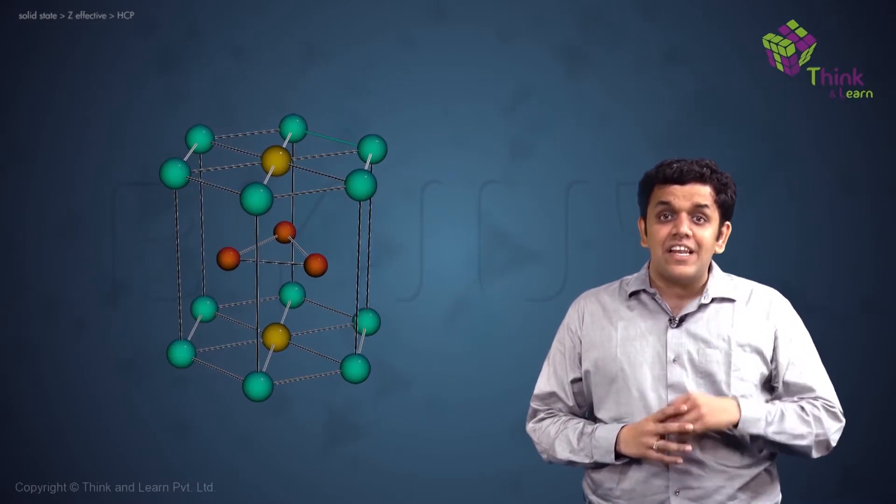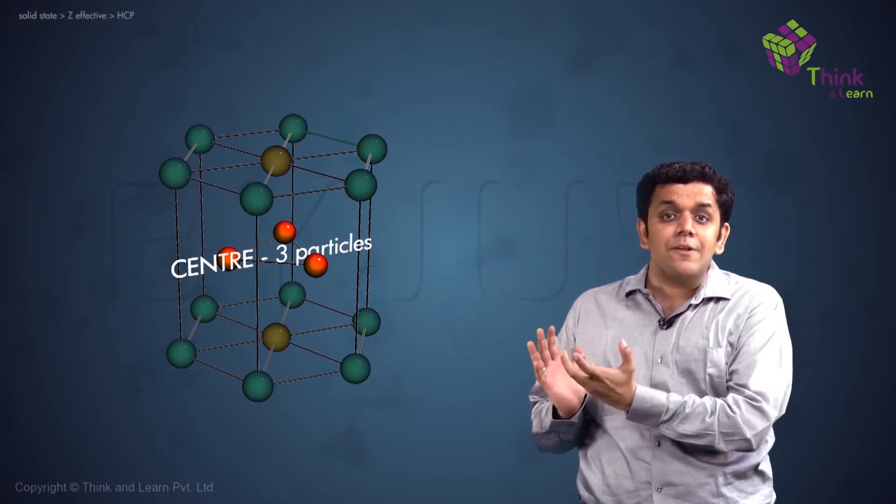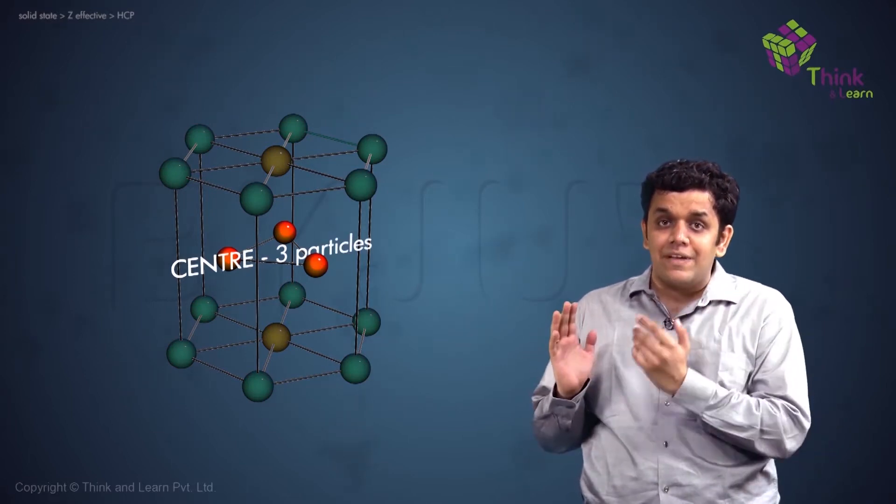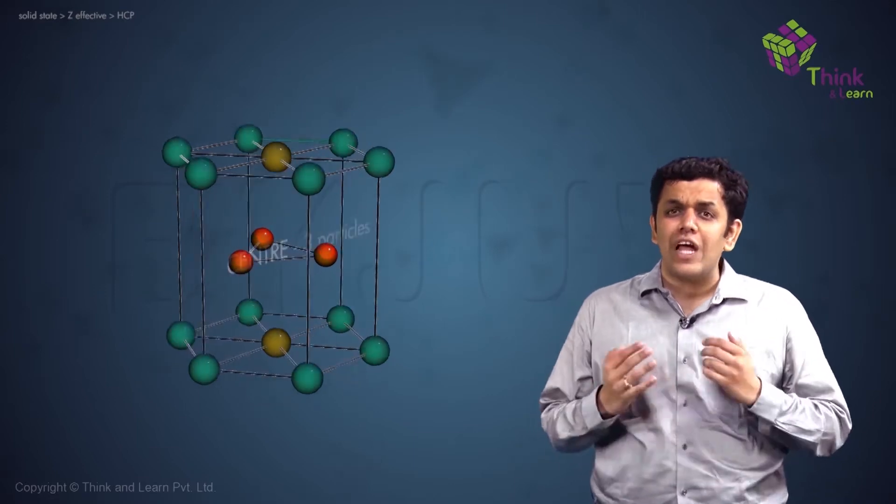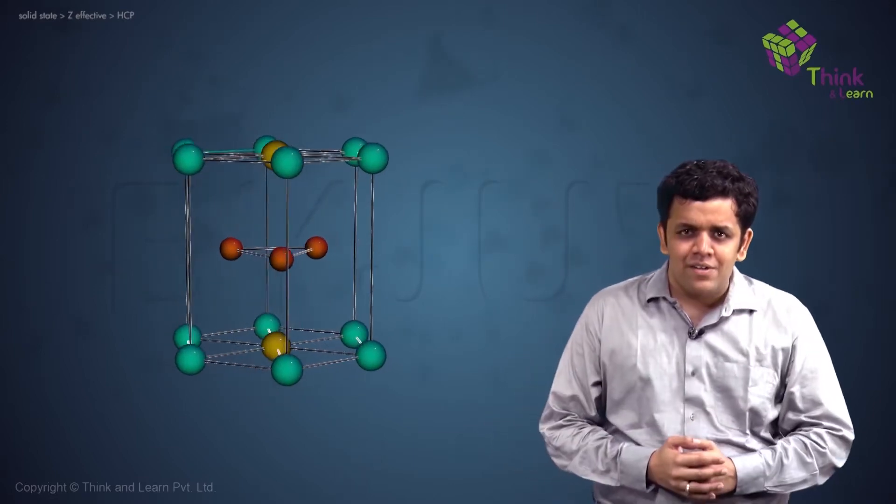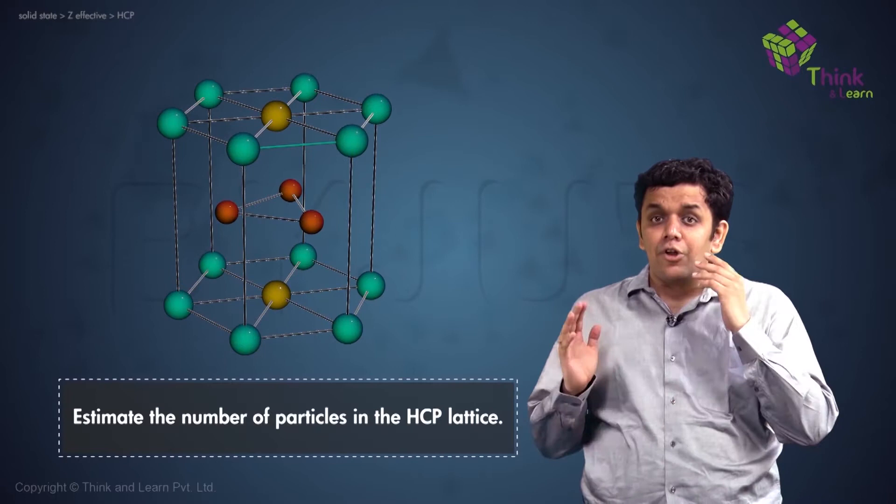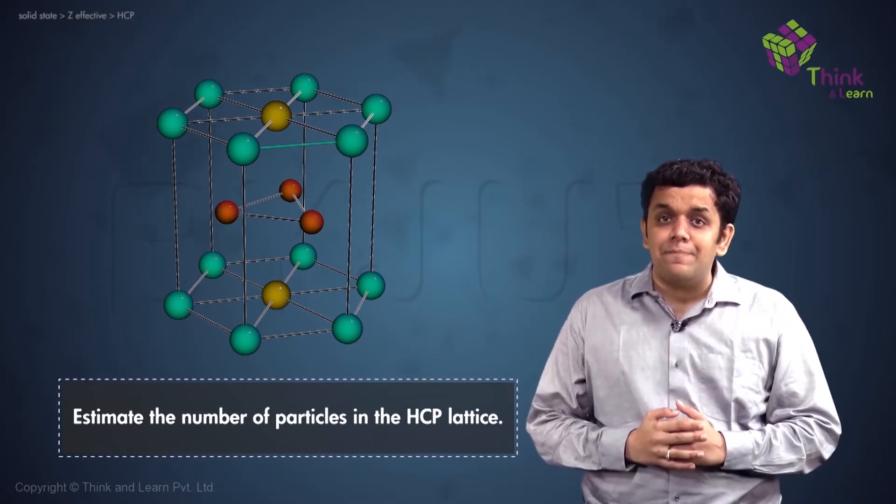Lastly, there are three particles occupying the middle or the center portion of the hexagon. Something like this. So now guys, I want you to take a shot regarding the number of particles in this HCP lattice.